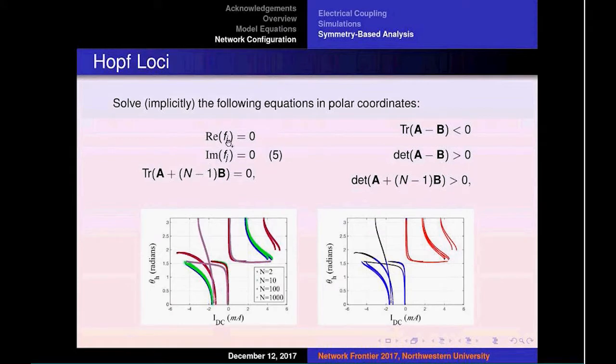Once we focus on that, we solve implicitly the equations that will provide the locus. On the left-hand side, we have the locus of the Hopf bifurcation that leads to the synchronous state. We're able to follow this implicitly for a network up to a thousand oscillators.